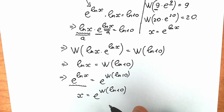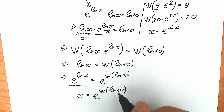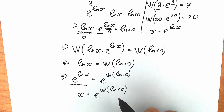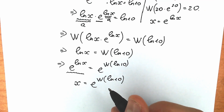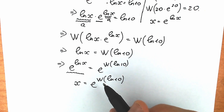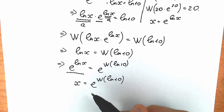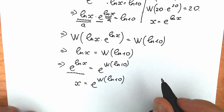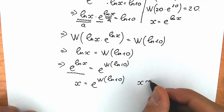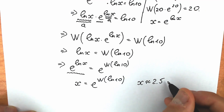A lot of students are confused about this final answer because they think we need to simplify the right side. Don't be scared: natural log 10 is a constant, Lambert W of a constant is also a constant, and you can find this value in math libraries or online. e raised to that constant is also a constant. So x is approximately equal to 2.5006.